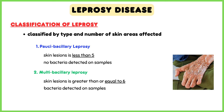Classification of Leprosy: Leprosy is classified by type and number of skin areas affected. Number 1 is paucibacillary leprosy, in which skin lesions number less than 5, with no bacteria detected on samples from those areas. Number 2 is multibacillary leprosy, in which skin lesions are greater than or equal to 6, with bacteria detected on samples from skin lesions, or both.